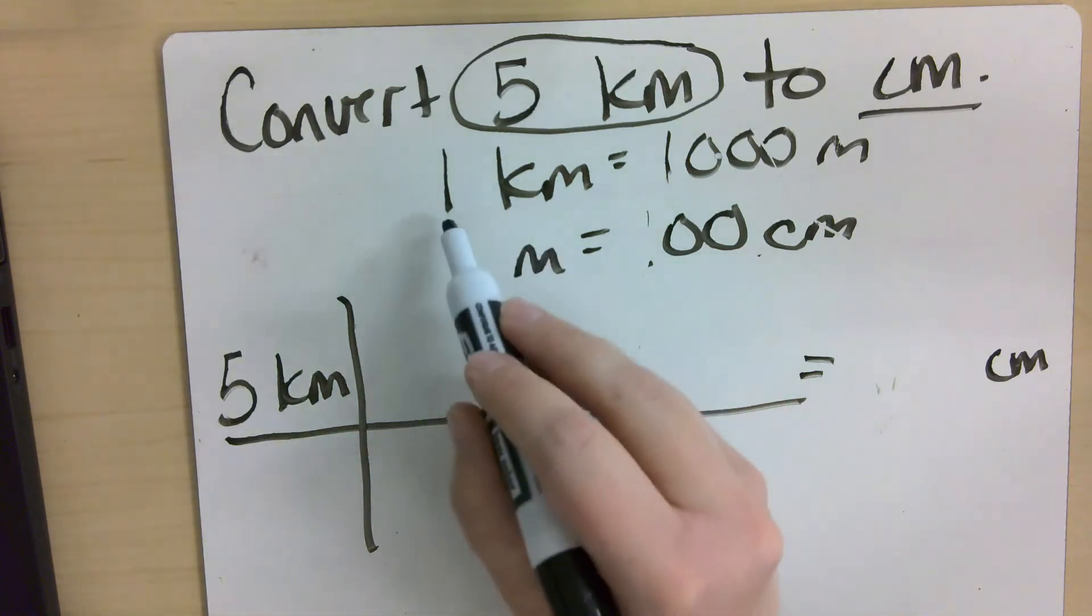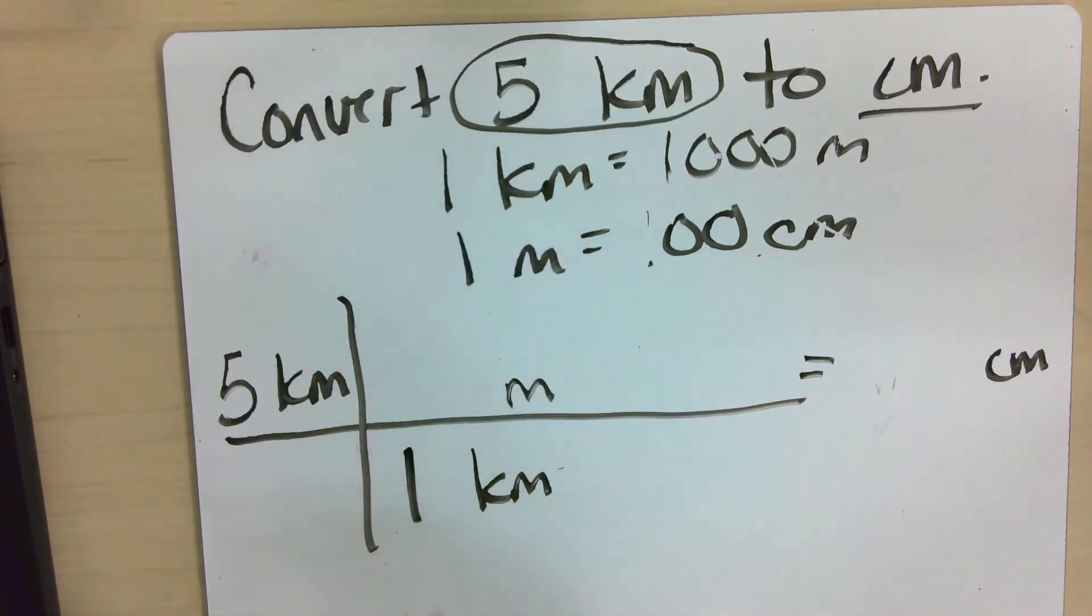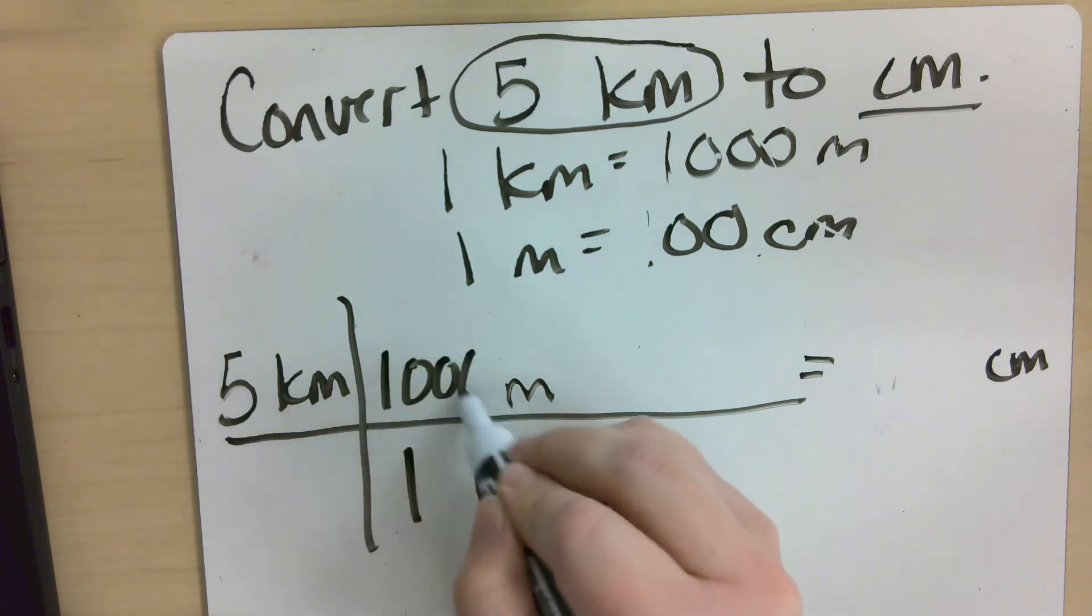Now, I know from this conversion factor that for every one kilometer, there are a thousand meters, okay?